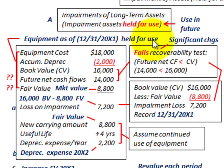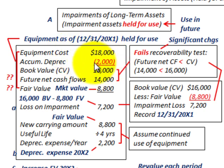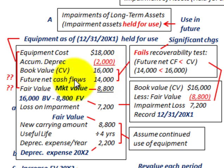For this impairment, we have to look for significant changes in the asset. We have an equipment cost of $18,000 and accumulated depreciation of $2,000, giving us a book value or carrying value of $16,000. We also need to determine the future net cash flows, which are given as $14,000, and the fair value or market value of the asset, which is $8,800.